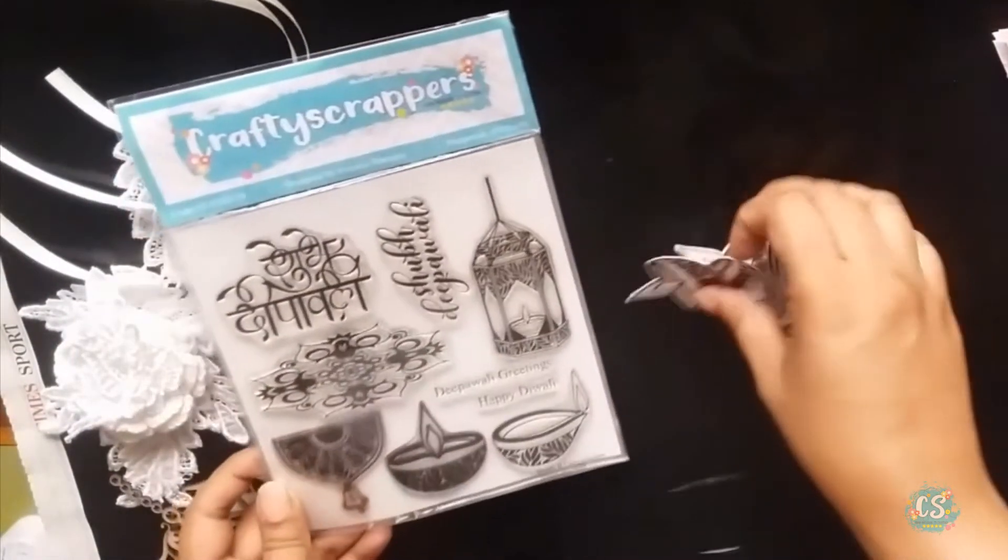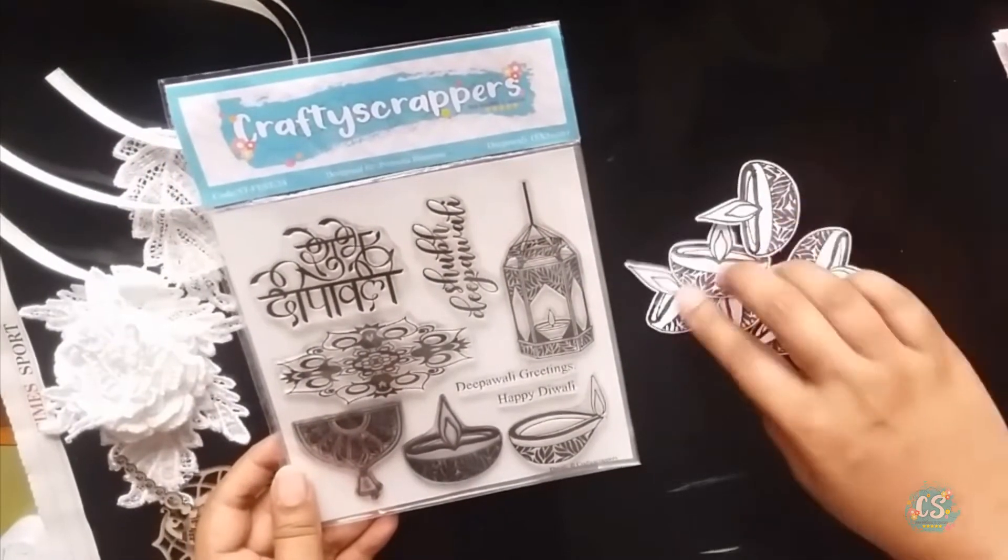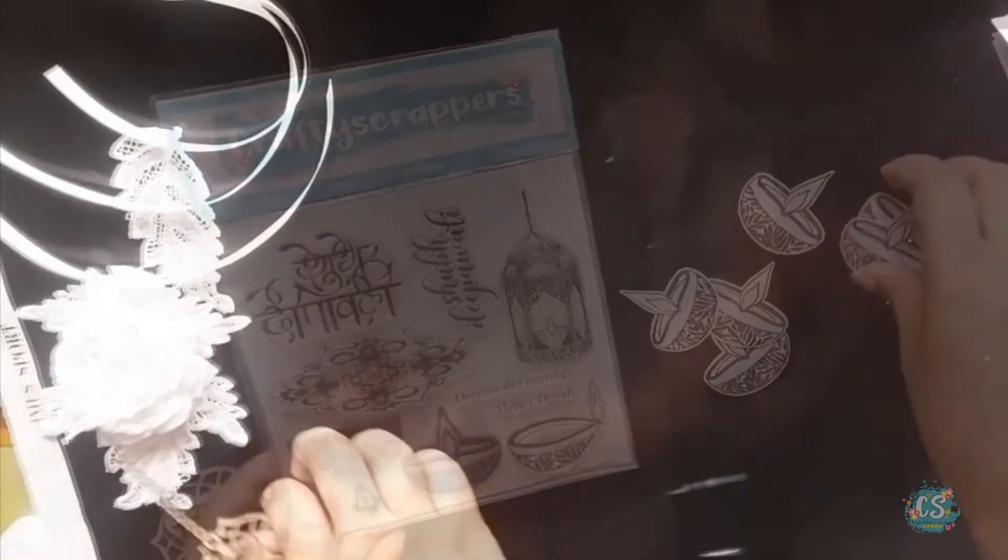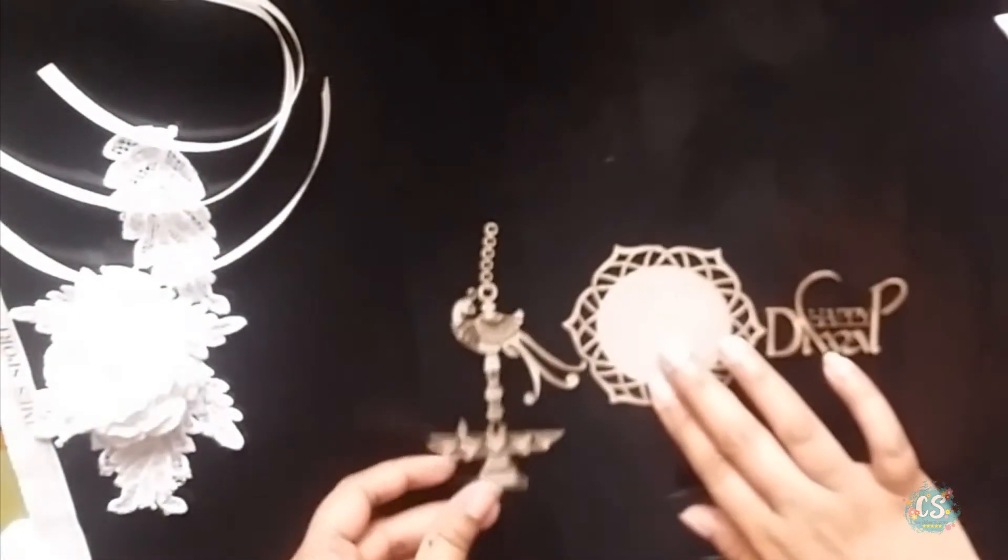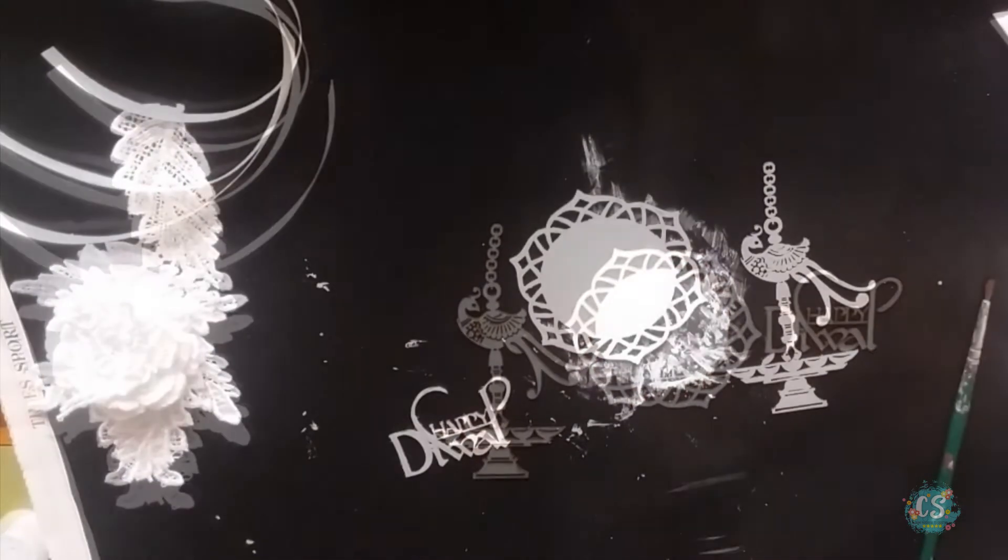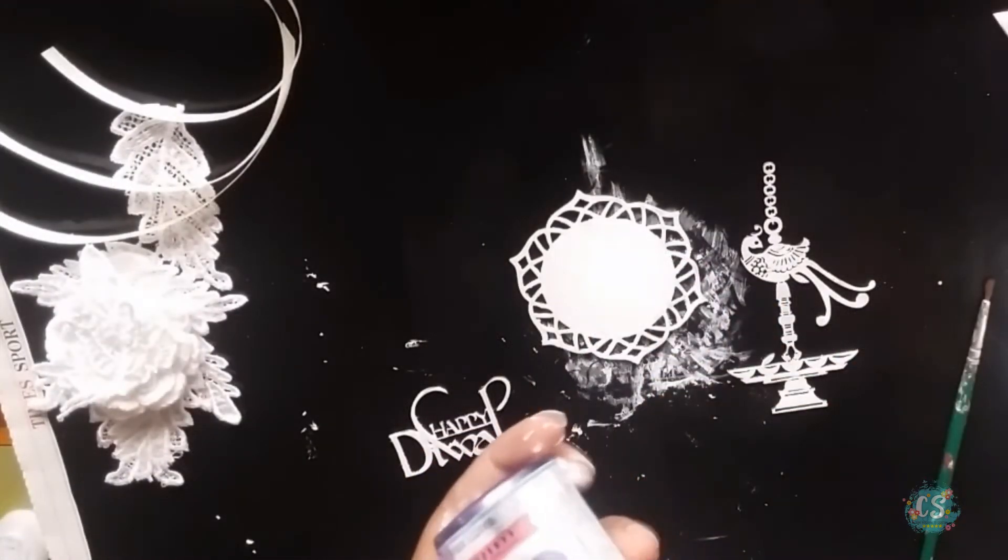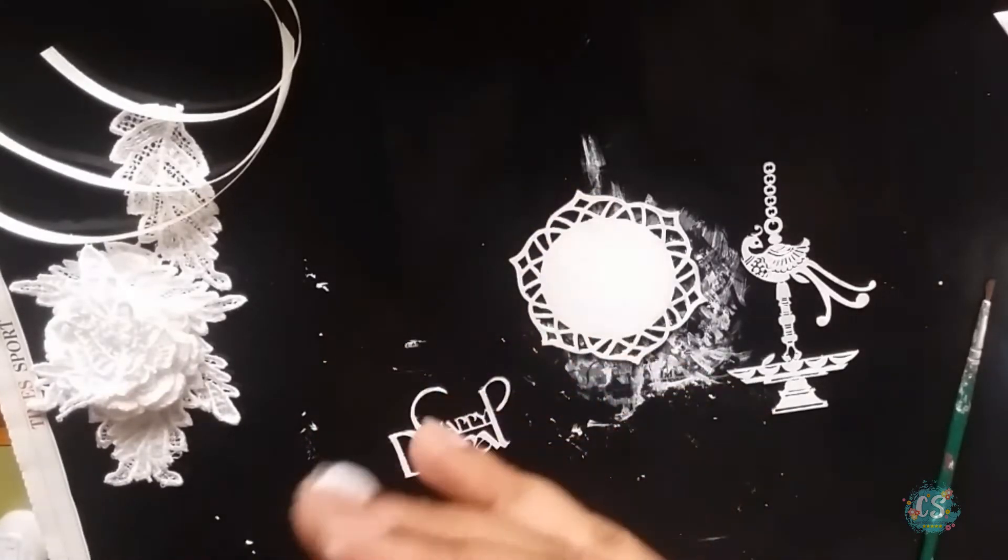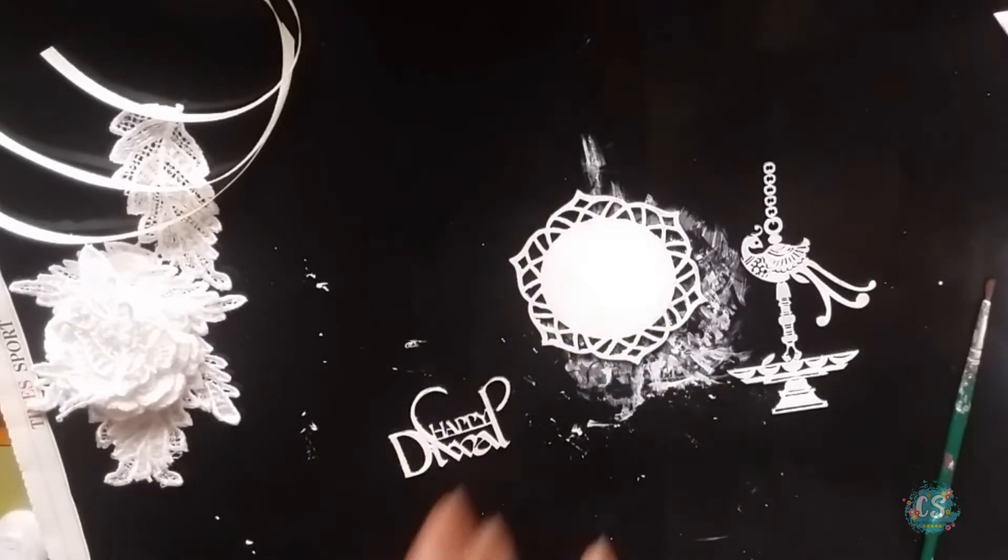Using this Deepavali stamp set, I chose the dia and I have stamped them and fuzzy cut them. Next I chose a few chipboards from my stash and I will be painting them. I have just covered everything first with white acrylic paint and then to add some color, I have used the Lushy Orchid Shimmer Spray.